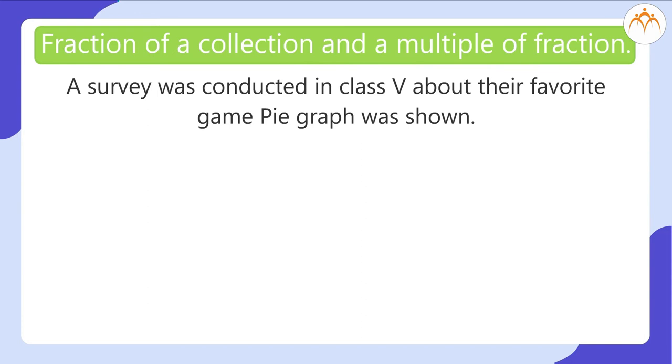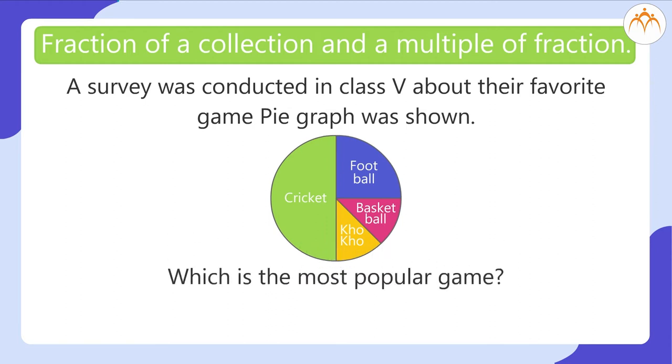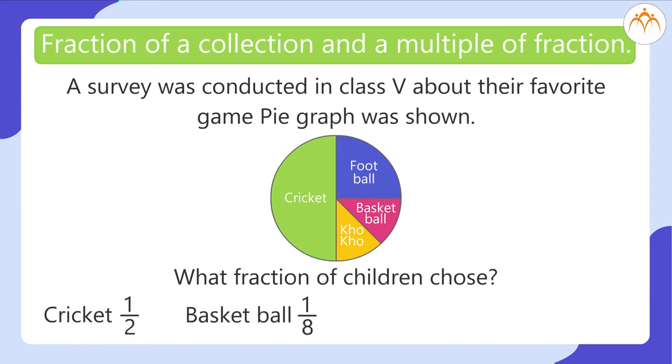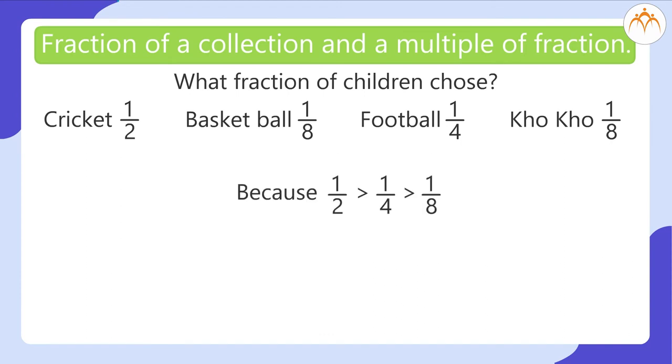A survey was conducted in class 5 about their favorite game. Pie graph was shown. Which is the most popular game? What fraction of children chose Cricket 1 by 2, Basketball 1 by 8, Football 1 by 4, Kho Kho 1 by 8, because 1 by 2 is greater than 1 by 4 is greater than 1 by 8.